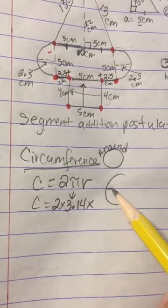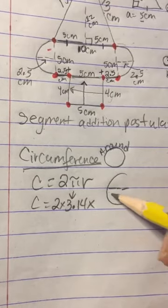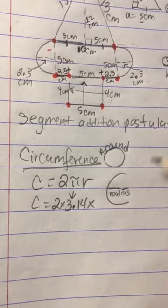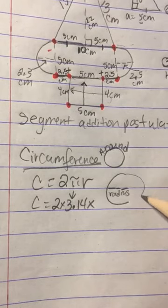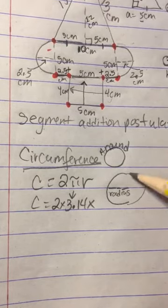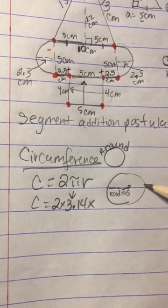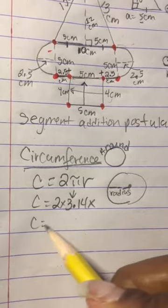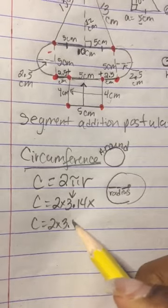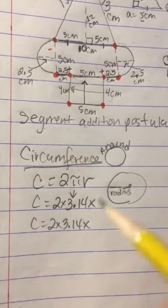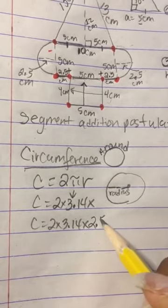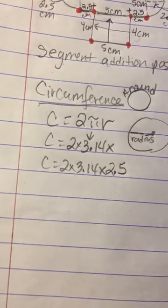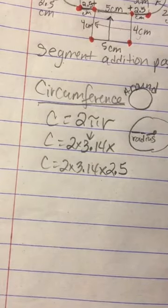The radius is this little halfway line. They gave us a semicircle, which is half of a circle. This line right here is the radius. The other side of the circle that we don't know, and this is the other side of the radius.